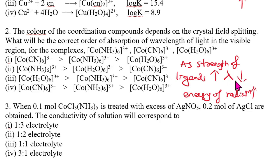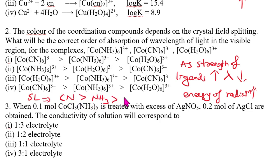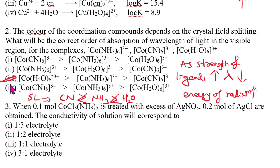When wavelength decreases, energy increases. The strength order of ligands: carbon donor is stronger than nitrogen donor, which is stronger than oxygen donor. So for absorption wavelength, completely reverse it. Therefore CN⁶ < NH₃ < H₂O for wavelength of absorption, and the answer for this question is option 3.